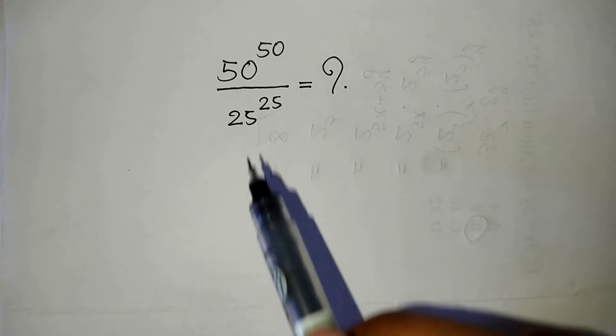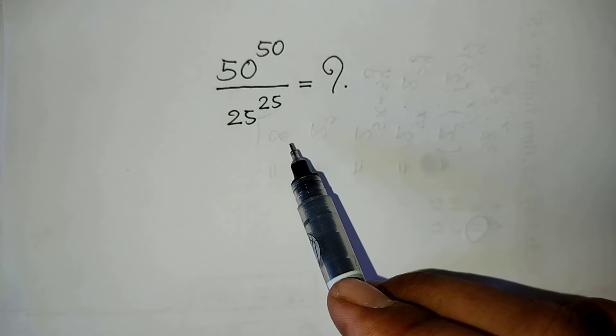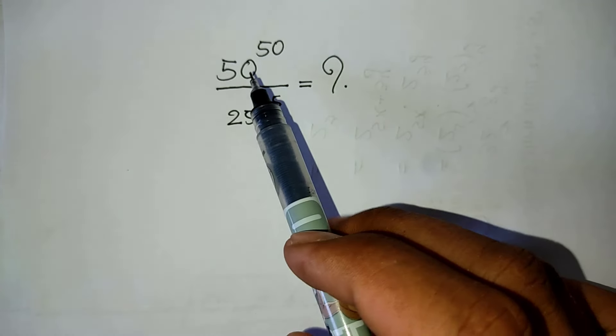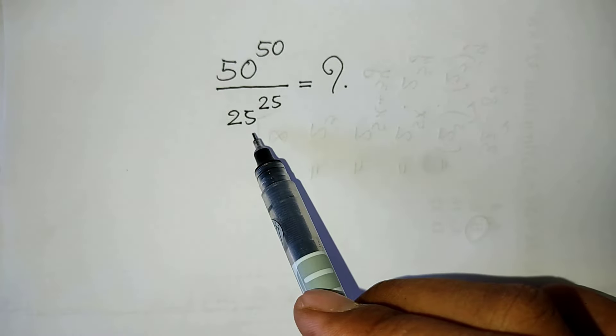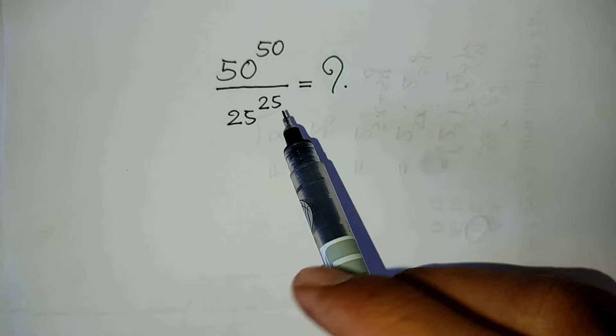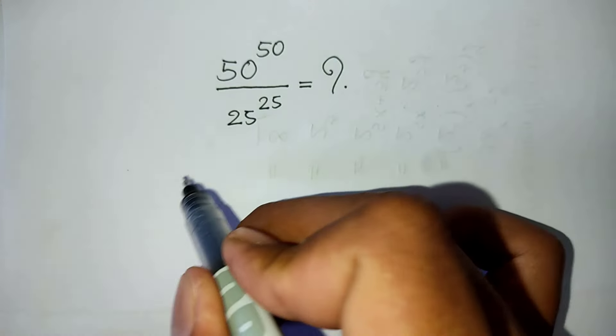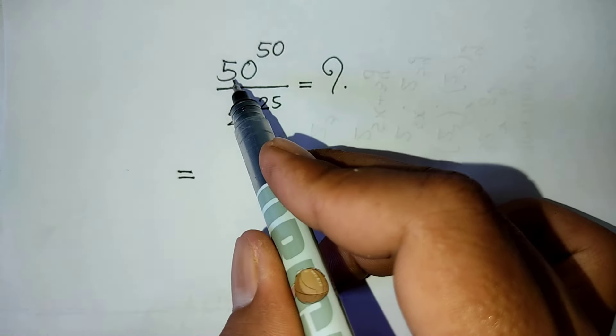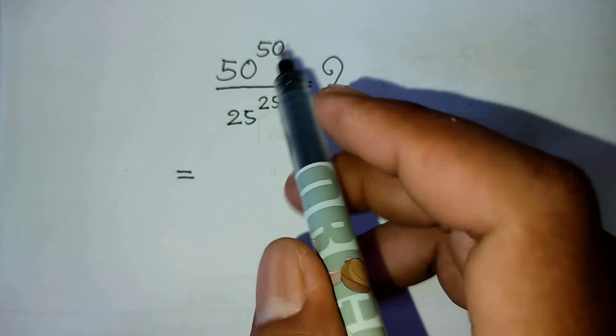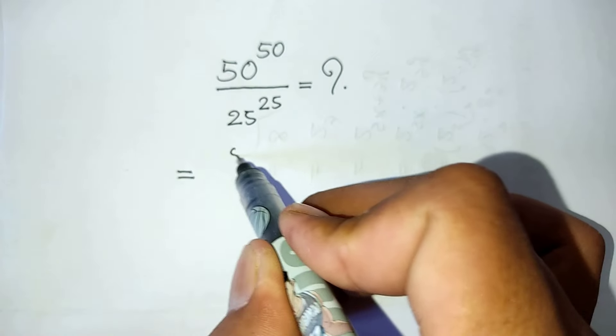Hello, here is my problem: 50 to the power of 50 divided by 25 to the power of 25. Now look at my solution. I can write it as equal to 50 to the power of 50.